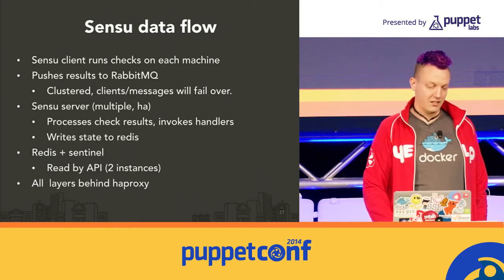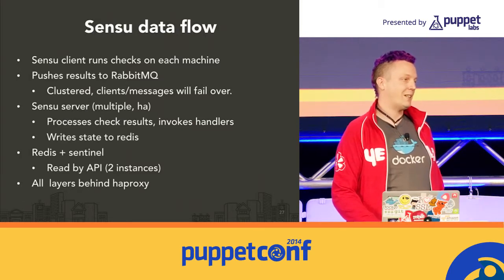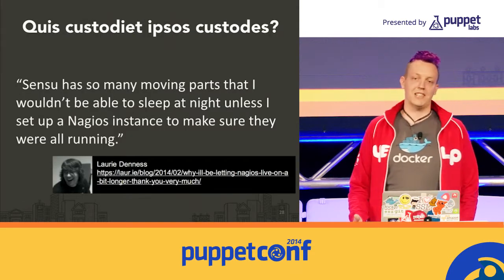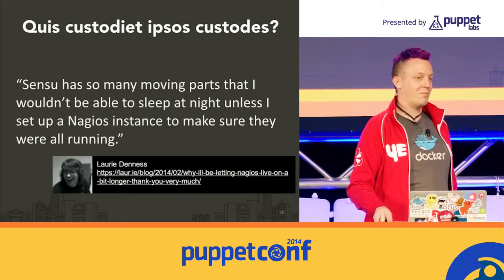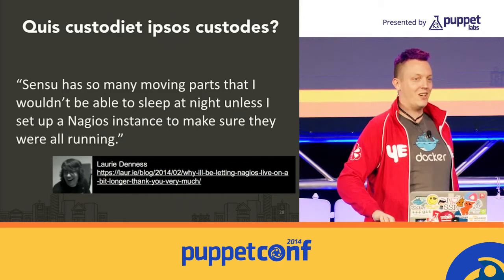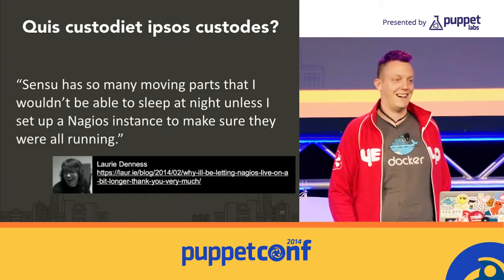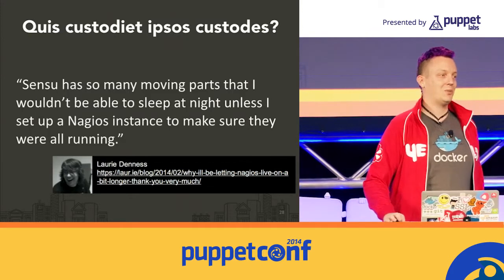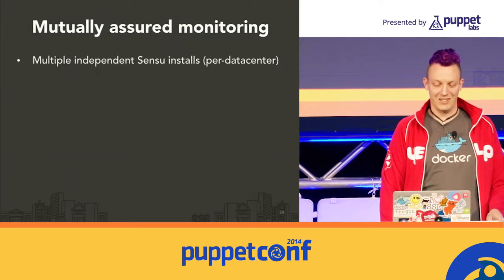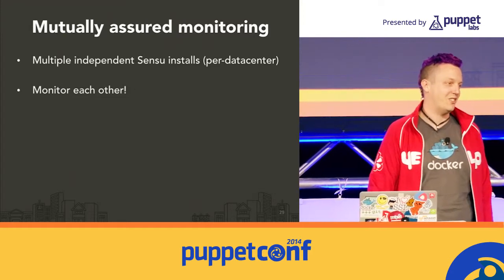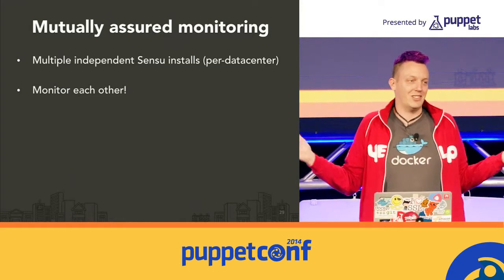Everything's behind HAProxy. The obvious question everyone asks is how do you monitor your monitoring system. The same solution that works in Nagios works in Sensu: we have multiple data centers, and each data center's Sensu monitors things in that data center and also the other data center's Sensu. That's fine.